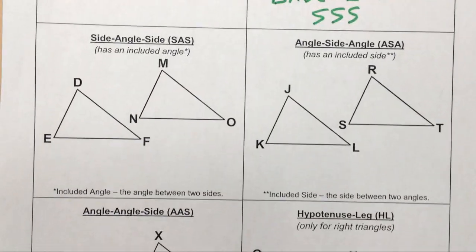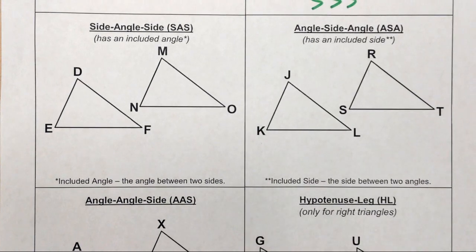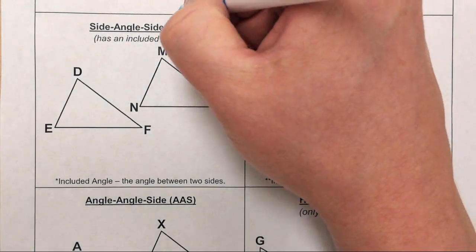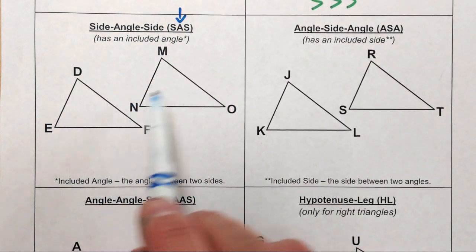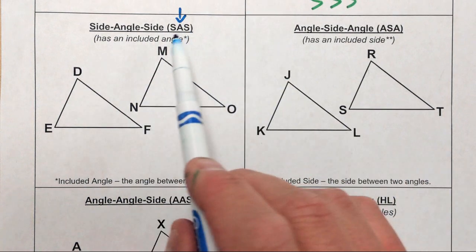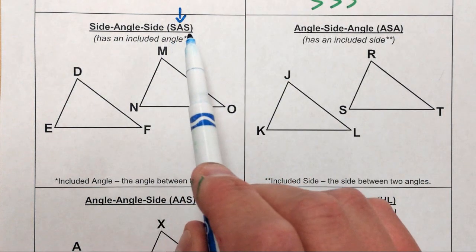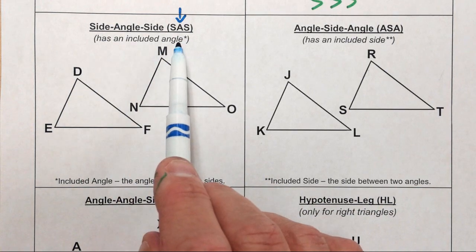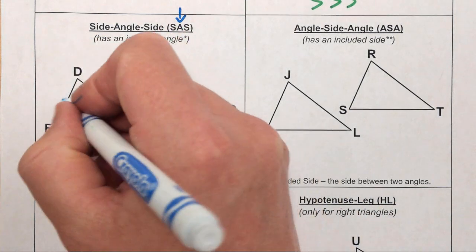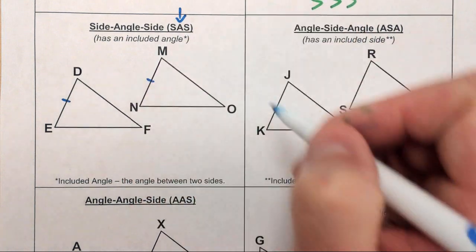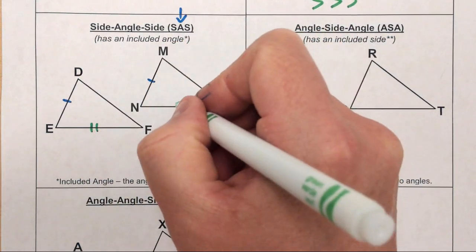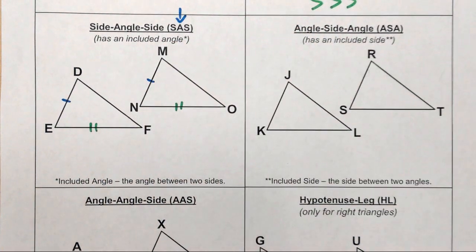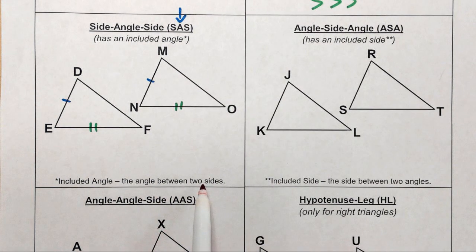Moving down, we have the Side-Angle-Side postulate. Notice how the A is between the two S's — that is on purpose. You're going to see that I label sides and angles that are congruent, and it's actually going to spell out side-angle-side. It says here it has an included angle. Let me mark the sides: let's say DE is congruent to MN, and also that side EF is congruent to side NO. The included angle is the angle that's between the two sides that we're actually checking for congruency.